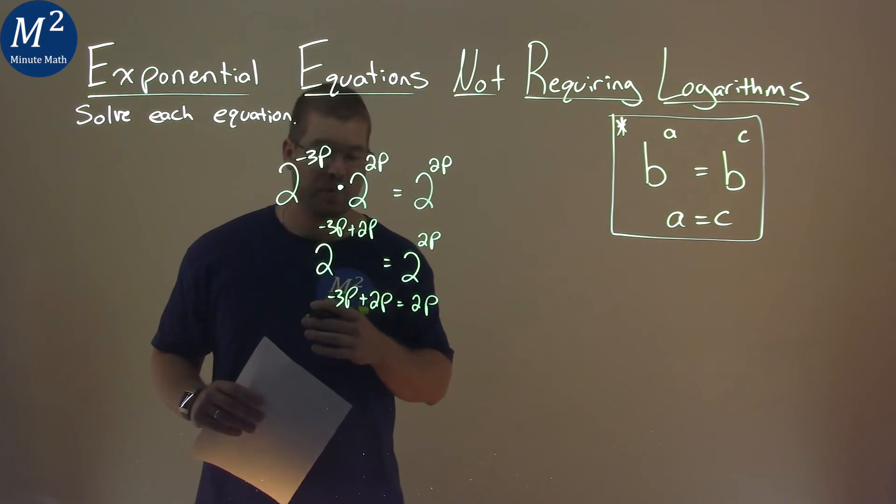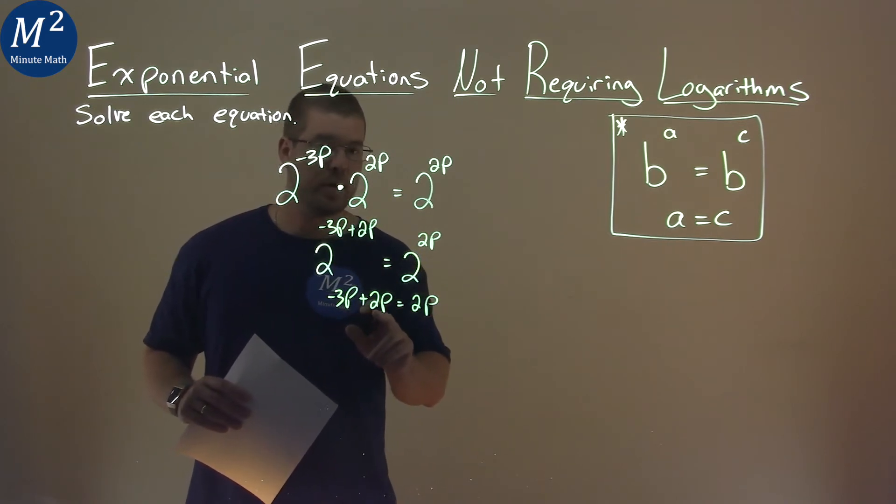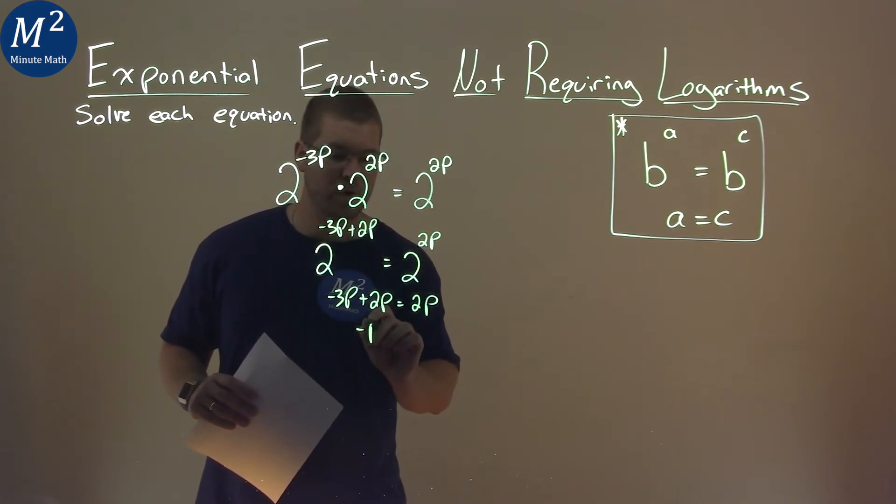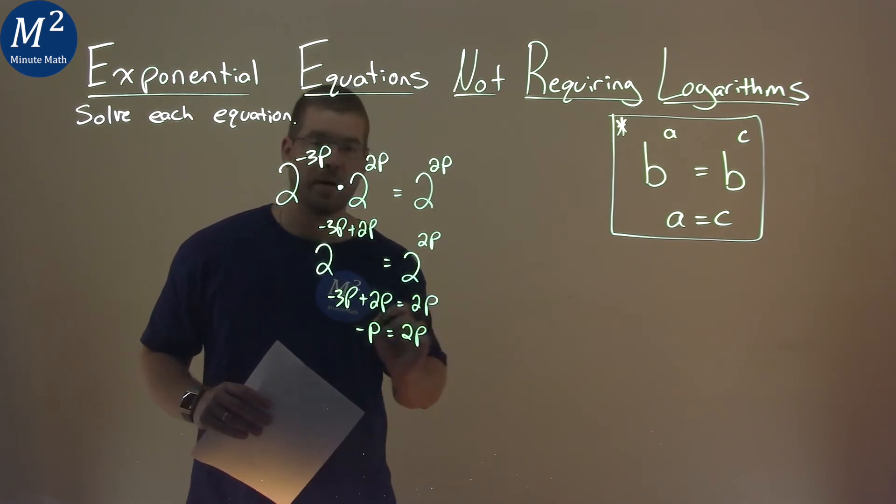From there, we solve for p. Negative 3p plus 2p is negative 1p, and that's equal to 2p right here.